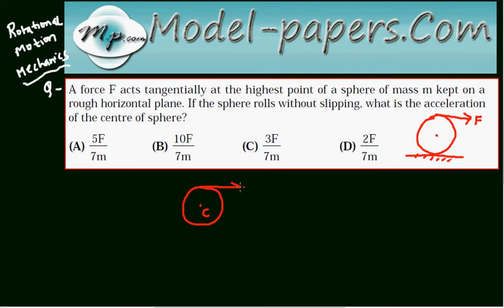This force F produces a torque about the center C and rotates the sphere in the clockwise direction. Let's say alpha is the angular acceleration of the sphere.